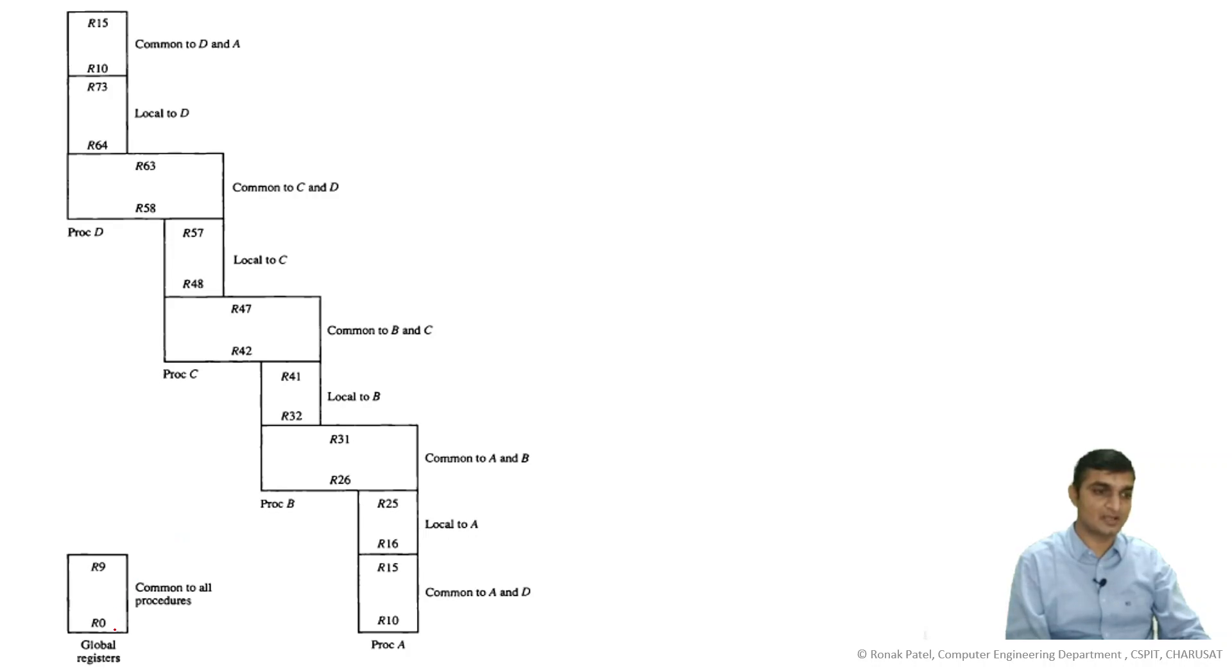Now these are the registers you can see, R0 to R70. If you actually see, there are 64 registers here and 10 registers here. This is in circular fashion, R0 to R15, so 10 registers that are global registers.